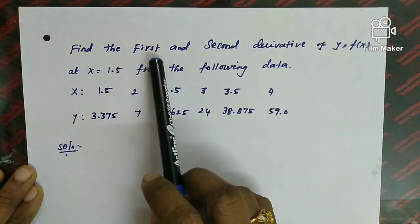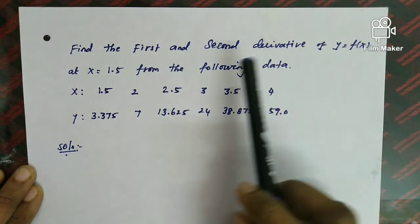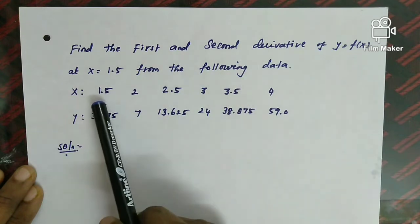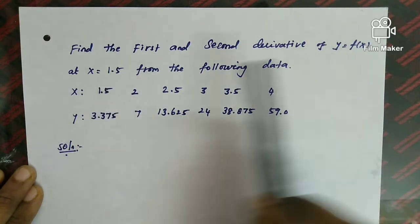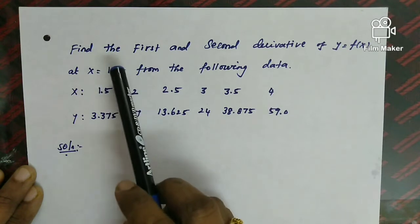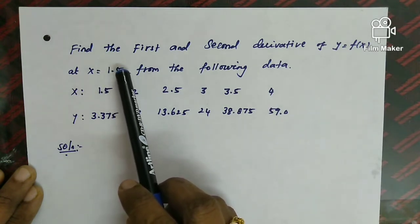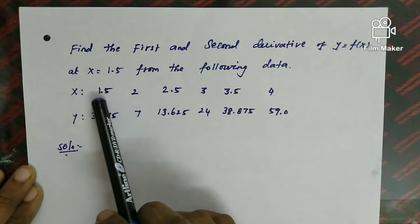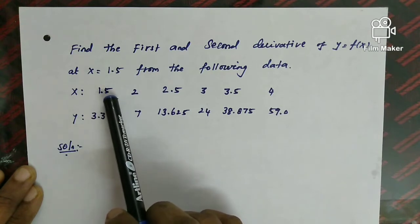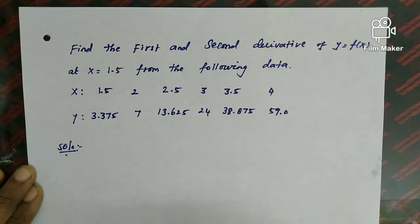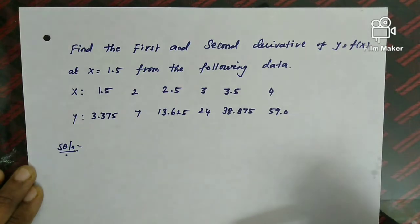We need the first derivative dy/dx and second derivative d²y/dx² at the point x = 1.5. Since x = 1.5 is the beginning value of the given data, we use the forward difference formula — Newton's forward difference.